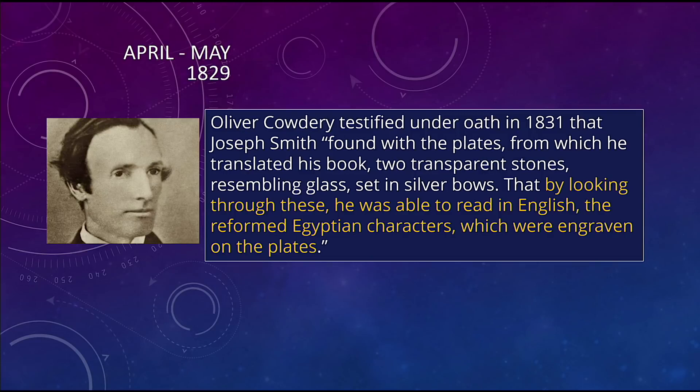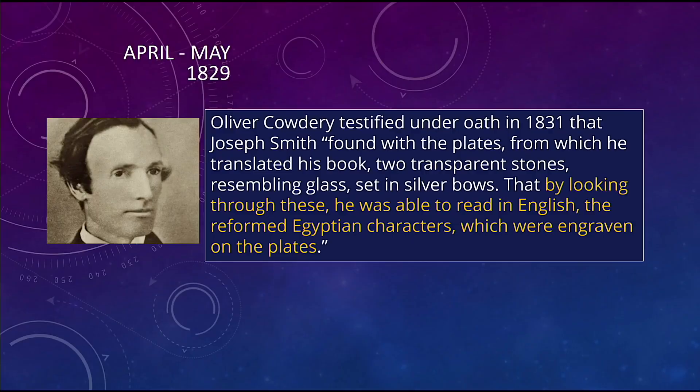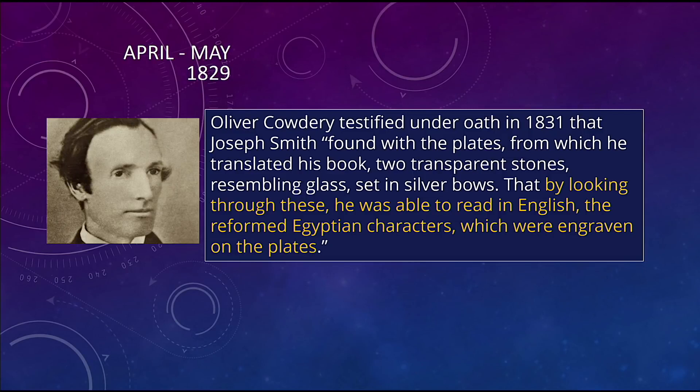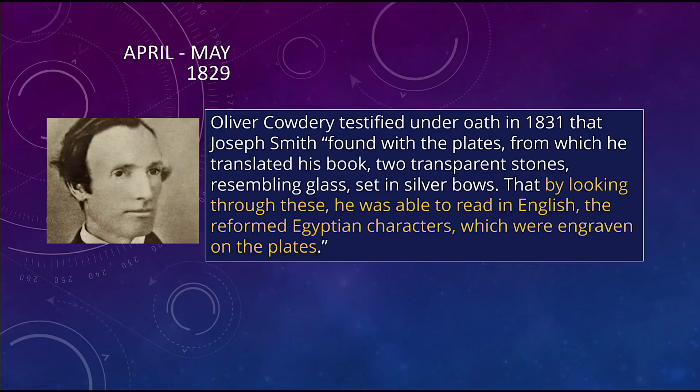Oliver Cowdery testified in a later proceeding that Joseph Smith found with the plates from which he translated the book. He translated it using transparent stones resembling glass set in silver bows — that's a description of the Urim and Thummim. By looking through these, he was able to read in English the reformed Egyptian characters which were engraven on the plates. That's how Oliver Cowdery said it, plain as can be. If he was seeing reformed Egyptian characters, he was using the plates — that's the only place he would be seeing the Egyptian characters. Oliver Cowdery reiterated that he translated the book from the plates.